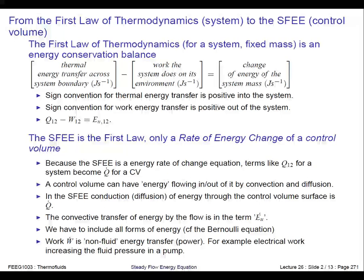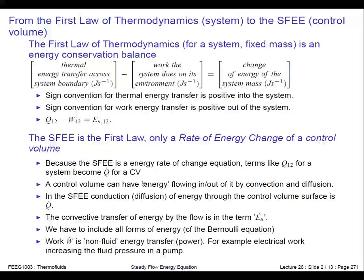We need to go from the first law to the steady flow energy equation, and there are a number of differences. The first is that the steady flow energy equation is a rate equation — we're interested in the rate at which energy is changing, not the change from state one to state two. The second change is we're not using a system anymore, because that's too restrictive. We are using a control volume, and we can transfer energy into and out of it by convection and diffusion. Our steady flow energy equation must account for these.